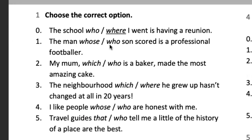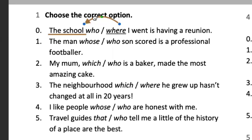C-Row here says: 'The school, who or where, I went is having a reunion.' We know that the school is a place to gather, a place where people can stay. It's a place, same as the university, the house, etc. So we identify that the best relative pronoun should be 'where.'